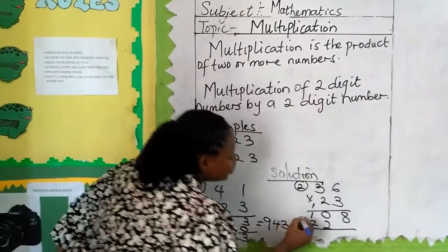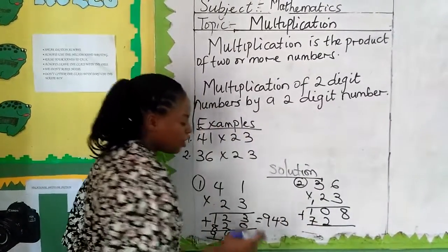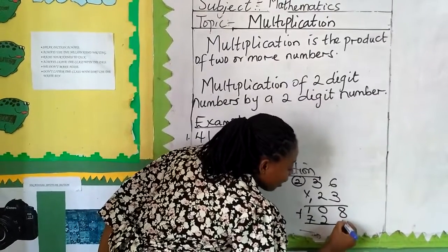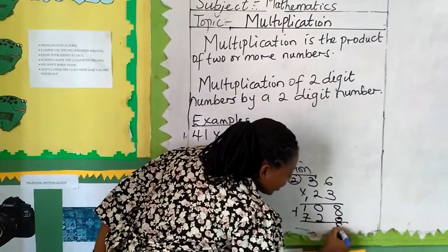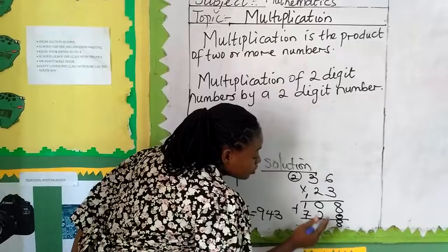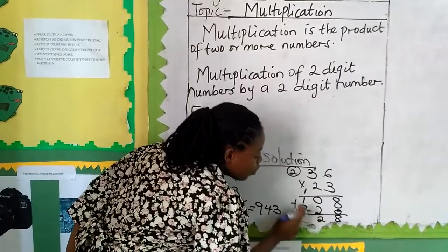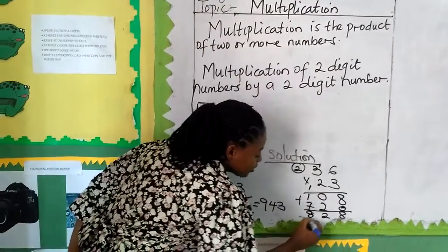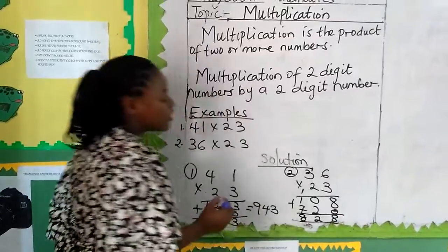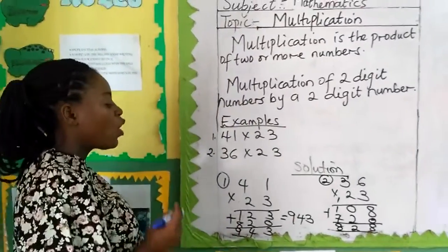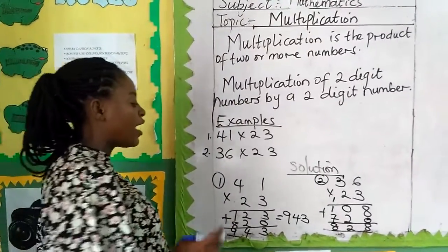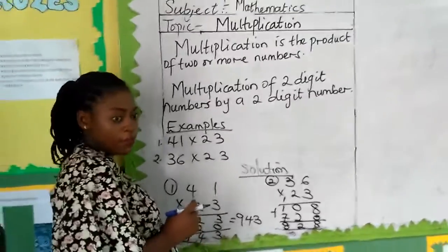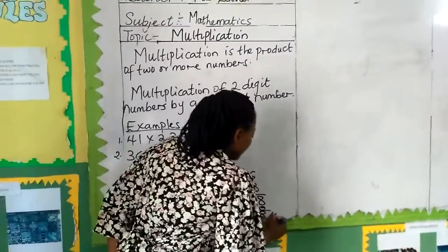We will do our addition here to get our final answer. 8 plus 0 gives us 8. 0 plus 2 gives us 2. 1 plus 7 gives us 8. So our final answer for 36 multiplied by 23 is 828.